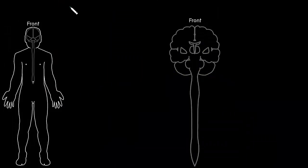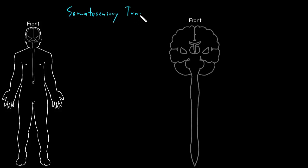In this video, I'm going to talk about the somatosensory tracts. Somatosensory refers to the senses of the body, and tracts are collections of axons traveling together through the central nervous system. The different types of somatosensory information tend to travel in different pathways as they move through the central nervous system.